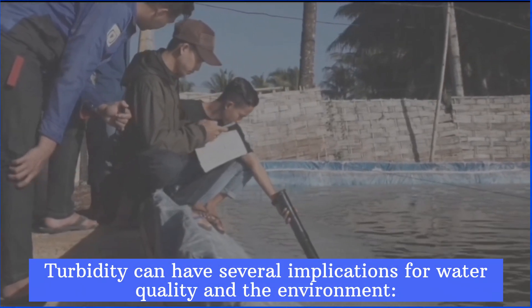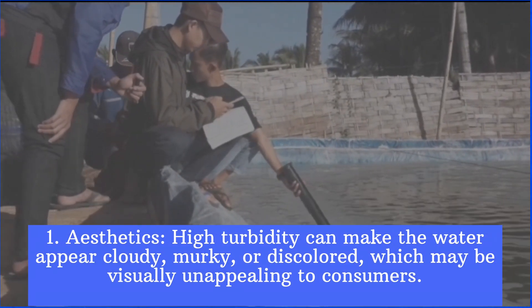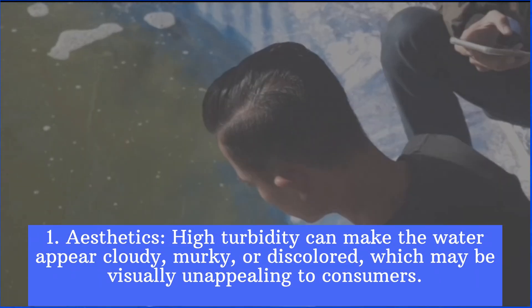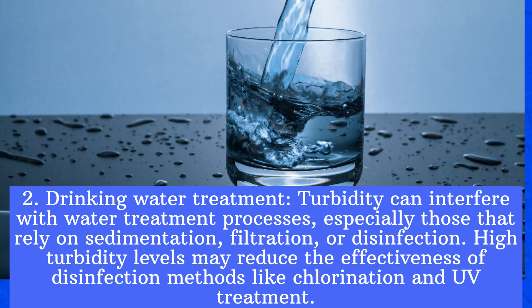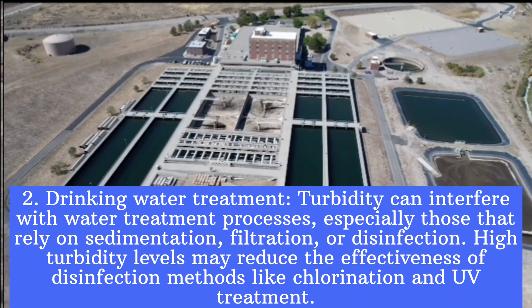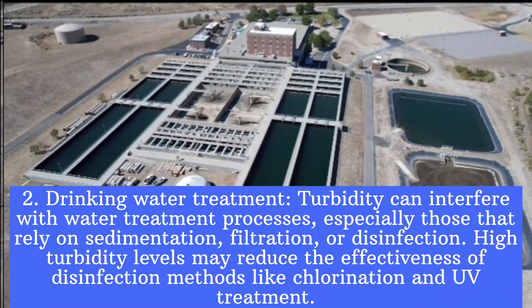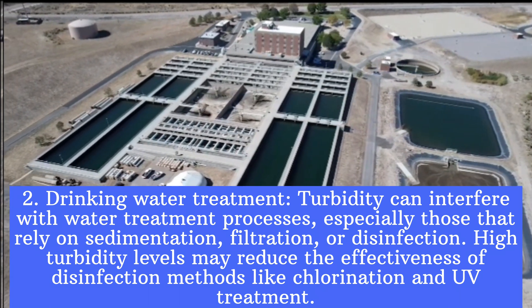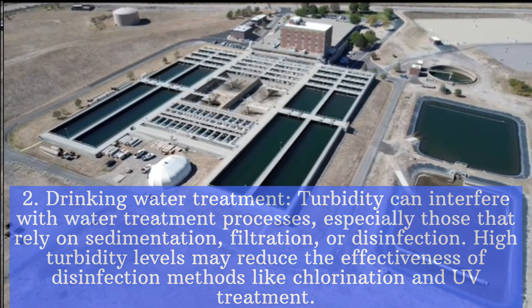Turbidity can have several implications for water quality and the environment. First, aesthetics: high turbidity can make the water appear cloudy, murky, or discoloured, which may be visually unappealing to consumers. Second, drinking water treatment: turbidity can interfere with water treatment processes, especially those that rely on sedimentation, filtration, or disinfection. High turbidity levels may reduce the effectiveness of disinfection methods like chlorination and UV treatment.